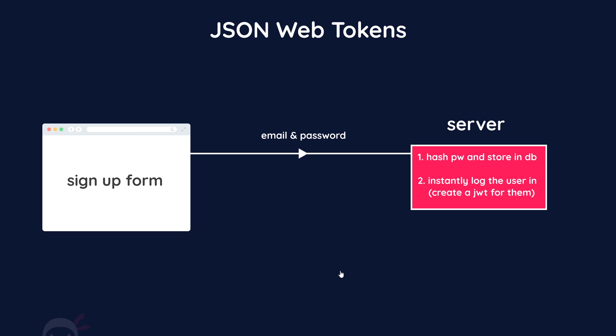When a user signs up in our application, we want to do two things after we get their email and password in the request. First of all, we want to hash their password and then store that user with the hashed password in the database. We've already written the code for that — we hash the password in the pre-save hook using Mongoose and then save that document to the database, so that is done.